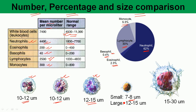The lymphocyte is very small at 7 to 8 micrometers when resting, but when activated by a pathogen they enlarge to 12 to 15 micrometers. The monocyte is the biggest cell at 15 to 30 micrometers in diameter. These are the cells of the immune system.